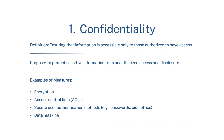Confidentiality — definition: ensuring that information is accessible only to those authorized to have access. Purpose: to protect sensitive information from unauthorized access and disclosure. Examples of measures include encryption, access control lists (ACLs), secure user authentication methods such as passwords and biometrics, and data masking.